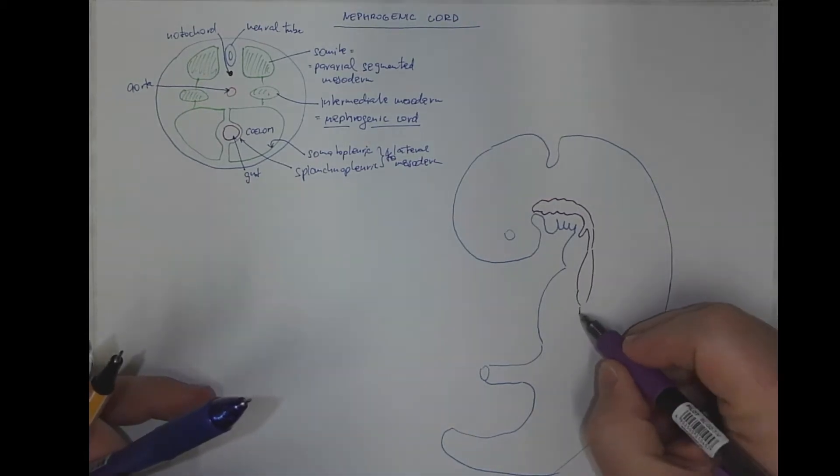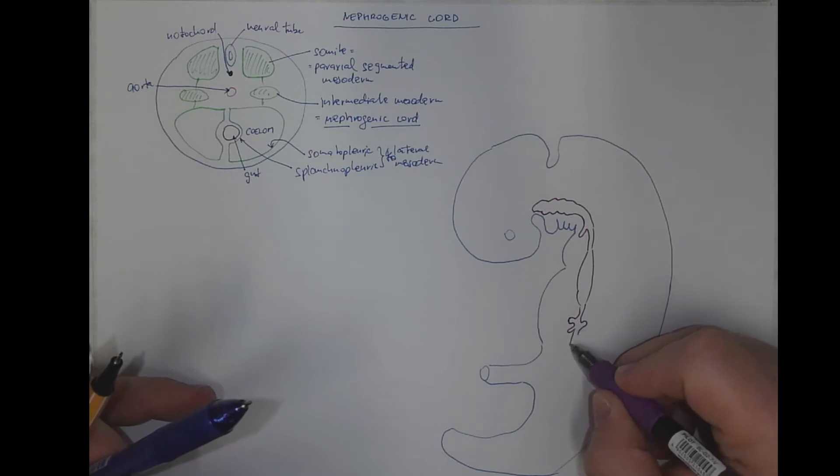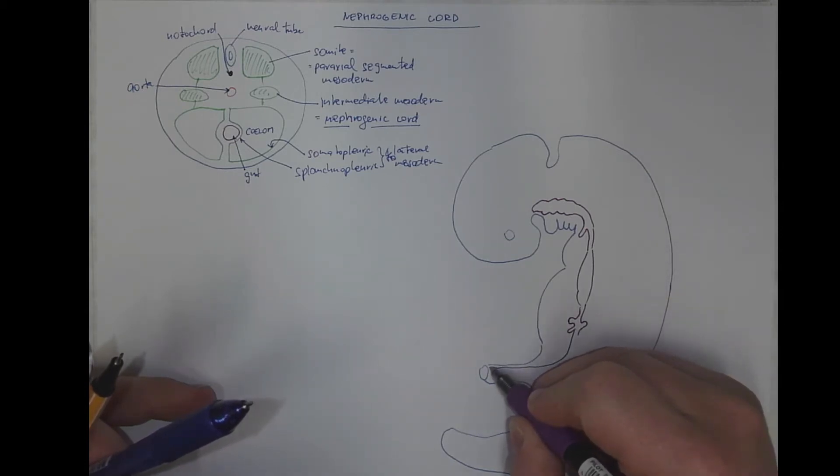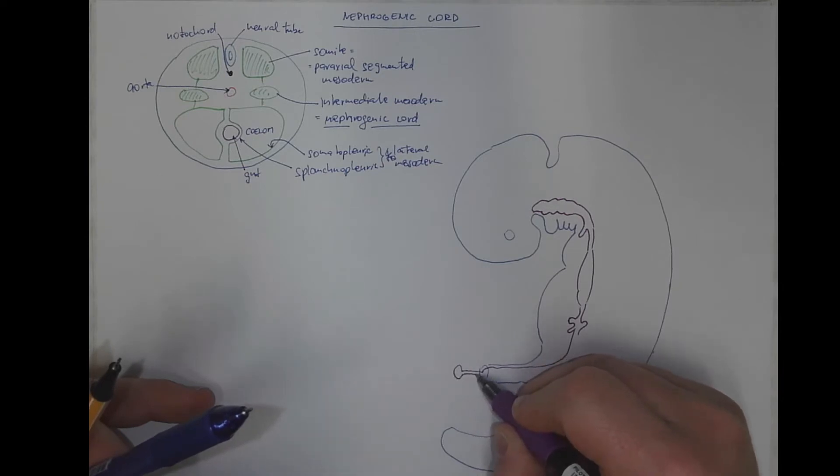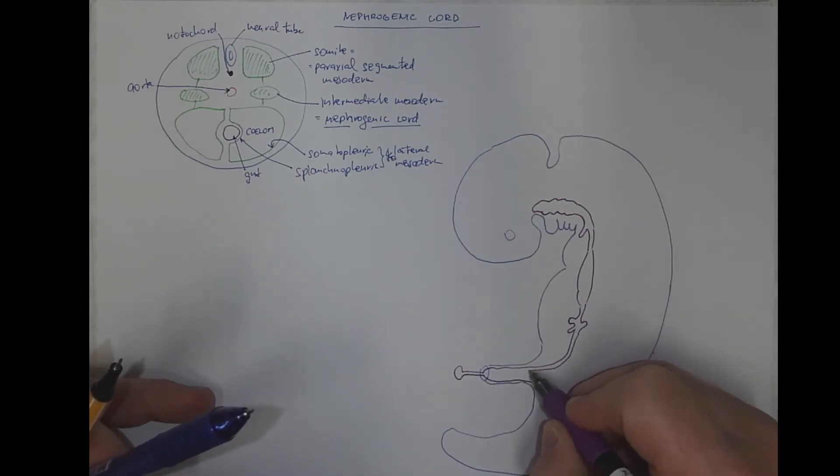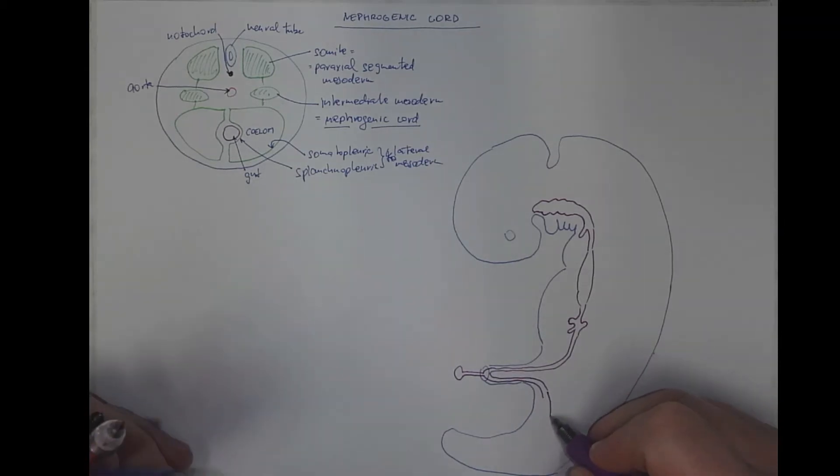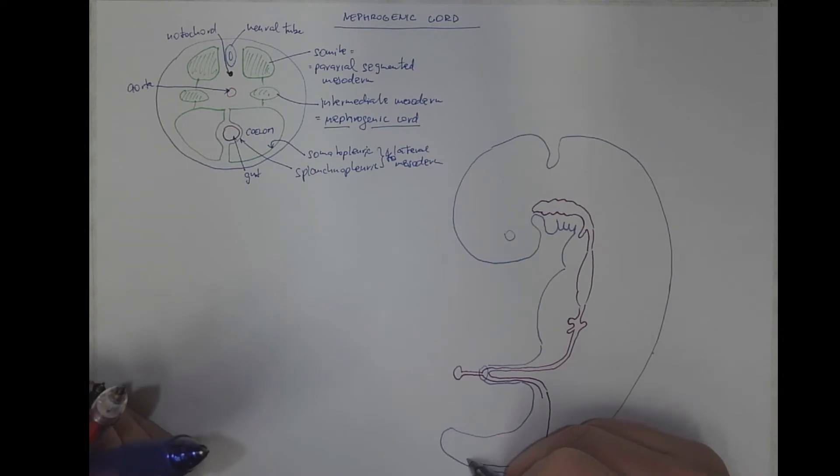The liver bud, ventral pancreas, the dorsal pancreas, the intestinal loop, with the vitelline duct, the remnants of the yolk vesicle.